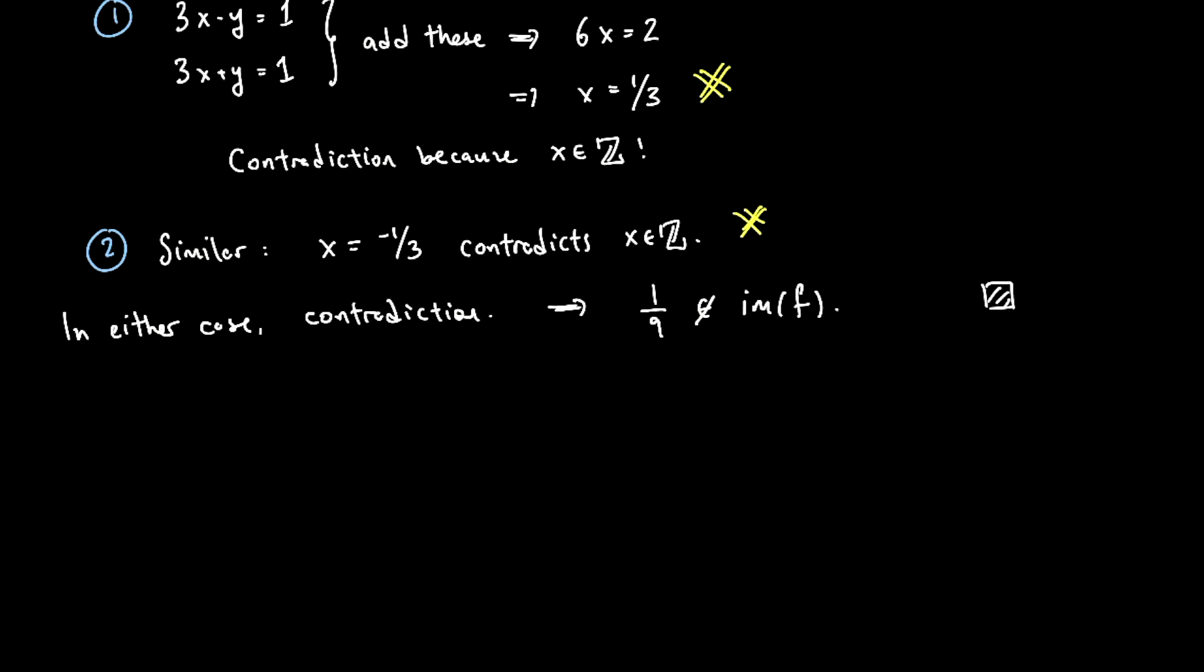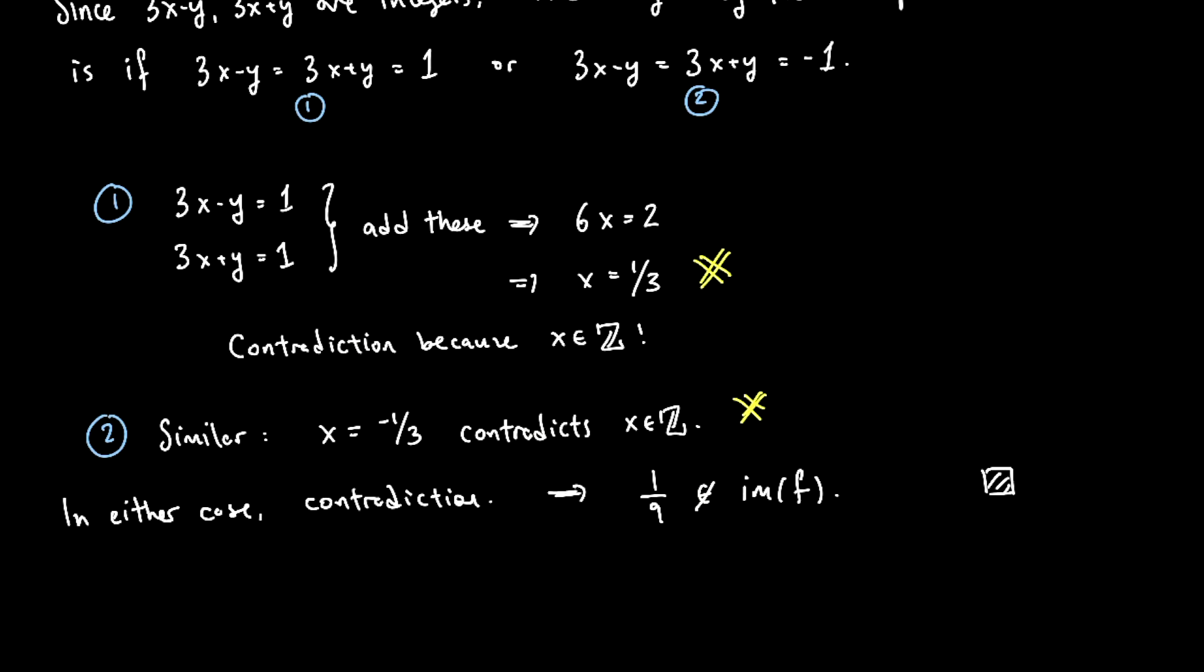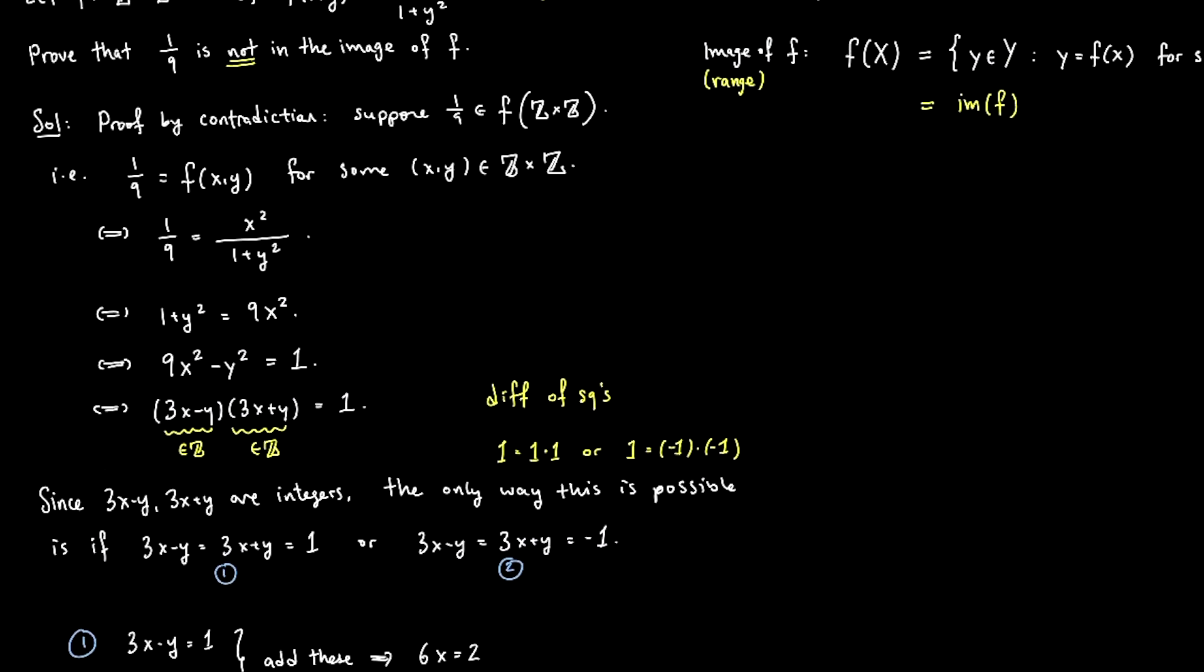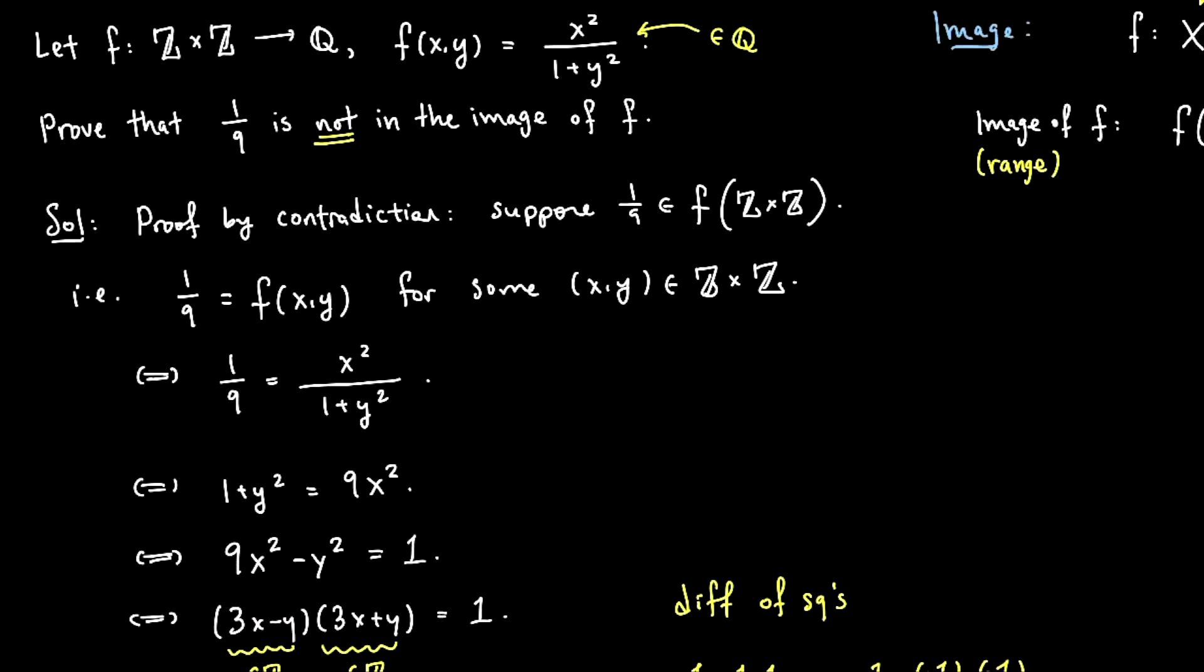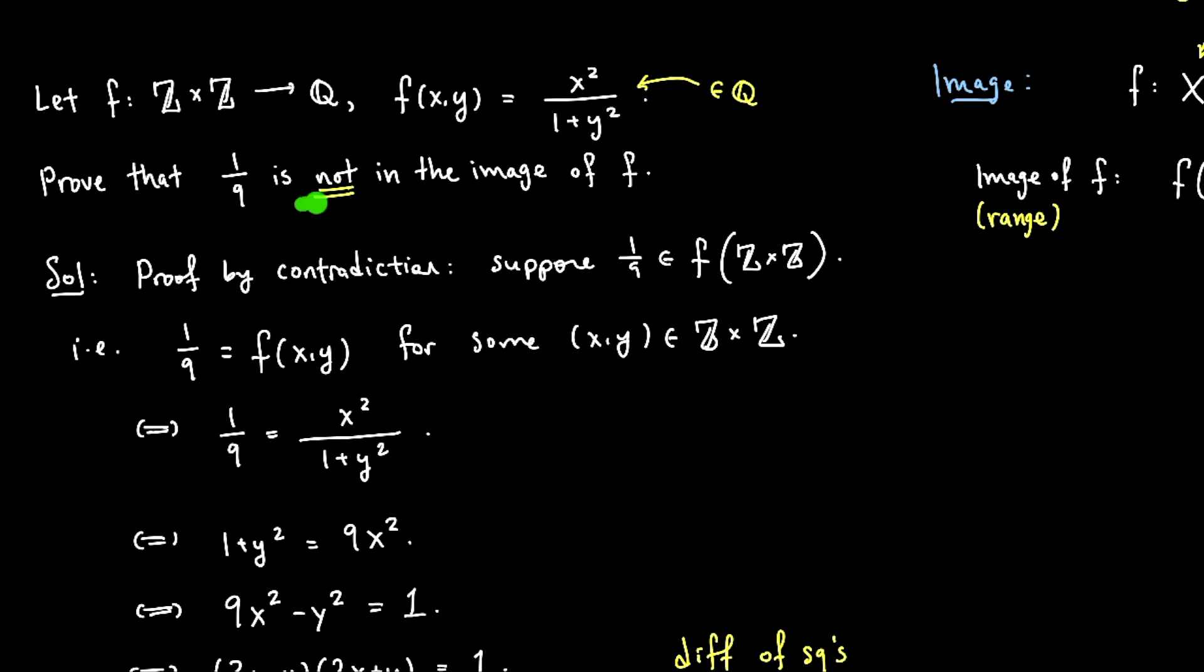So very frequently, to prove that a number, or a pair, or some output, some element is not in the image of a function, very frequently proof by contradiction is going to do the job.